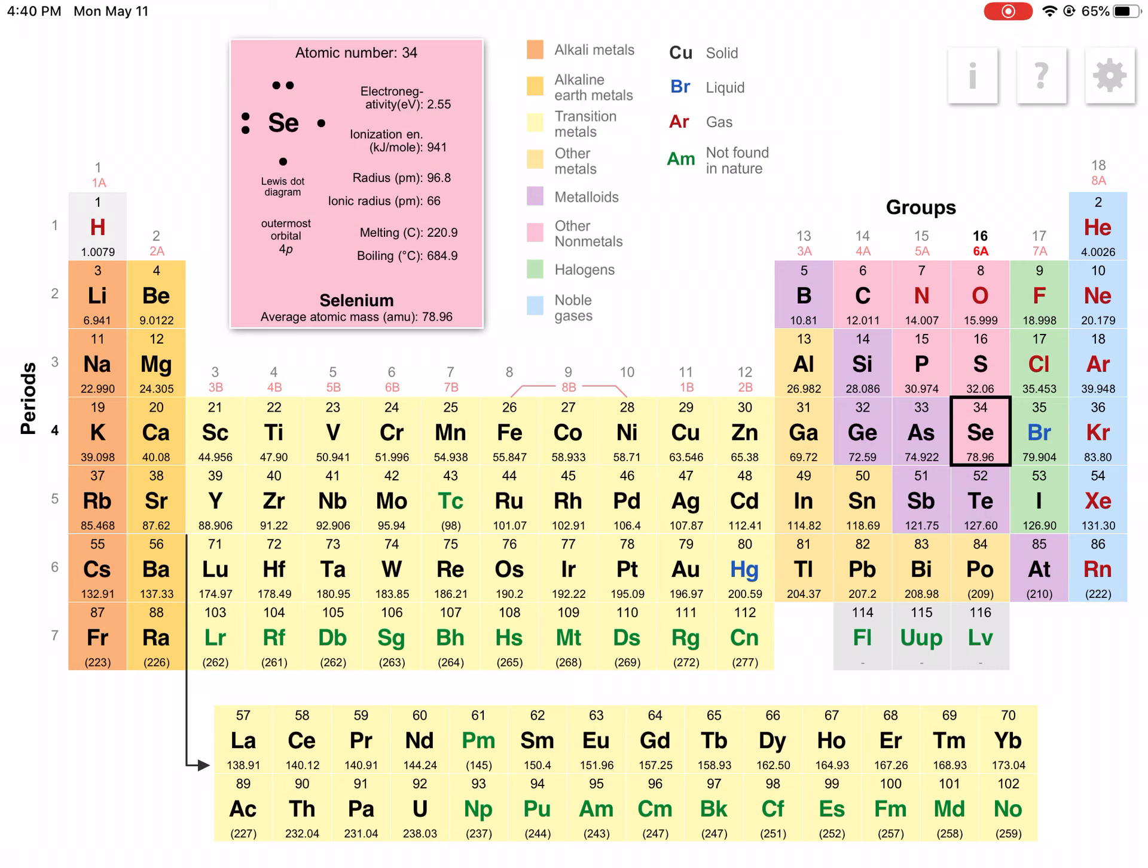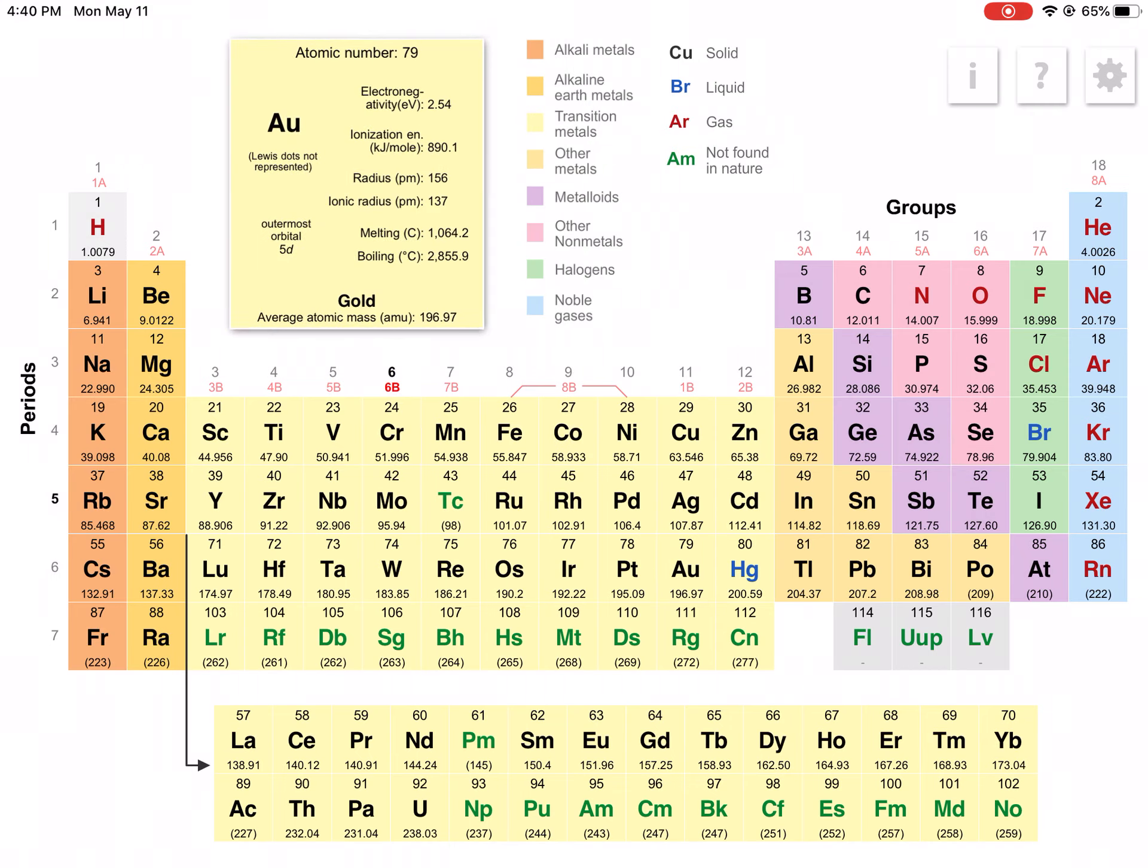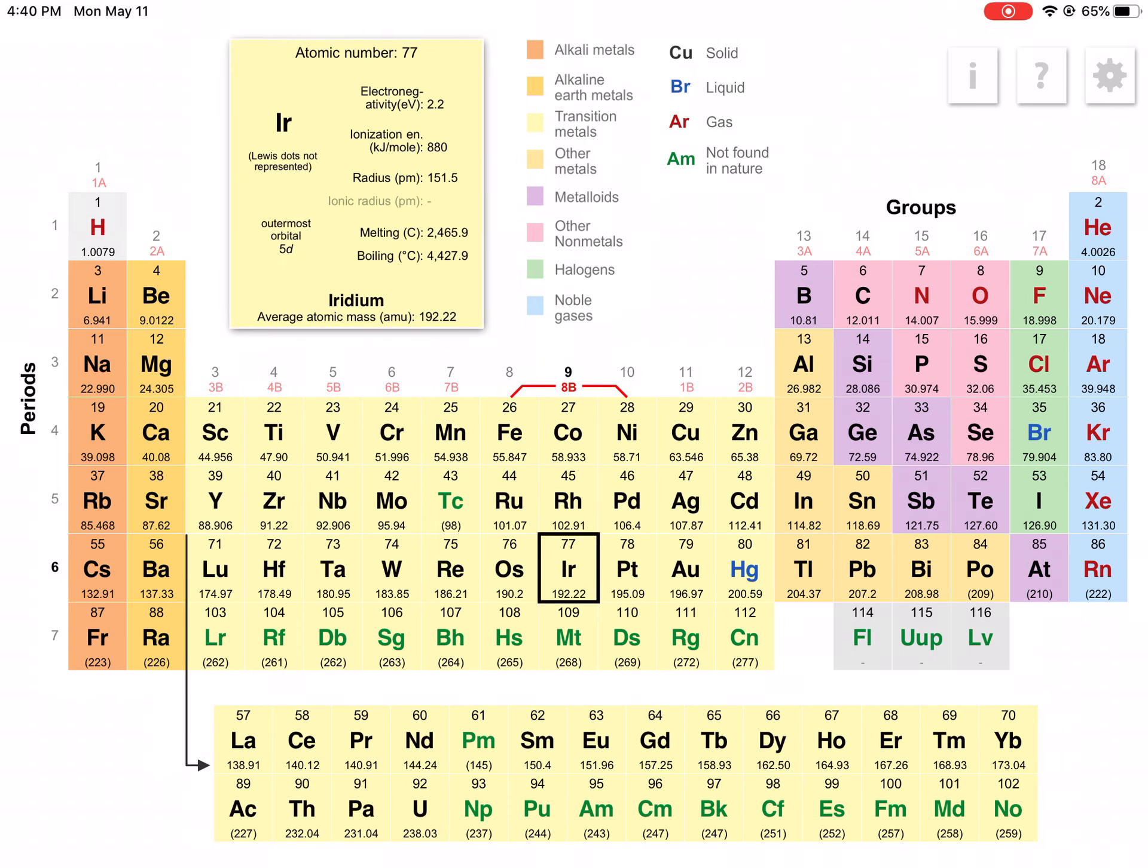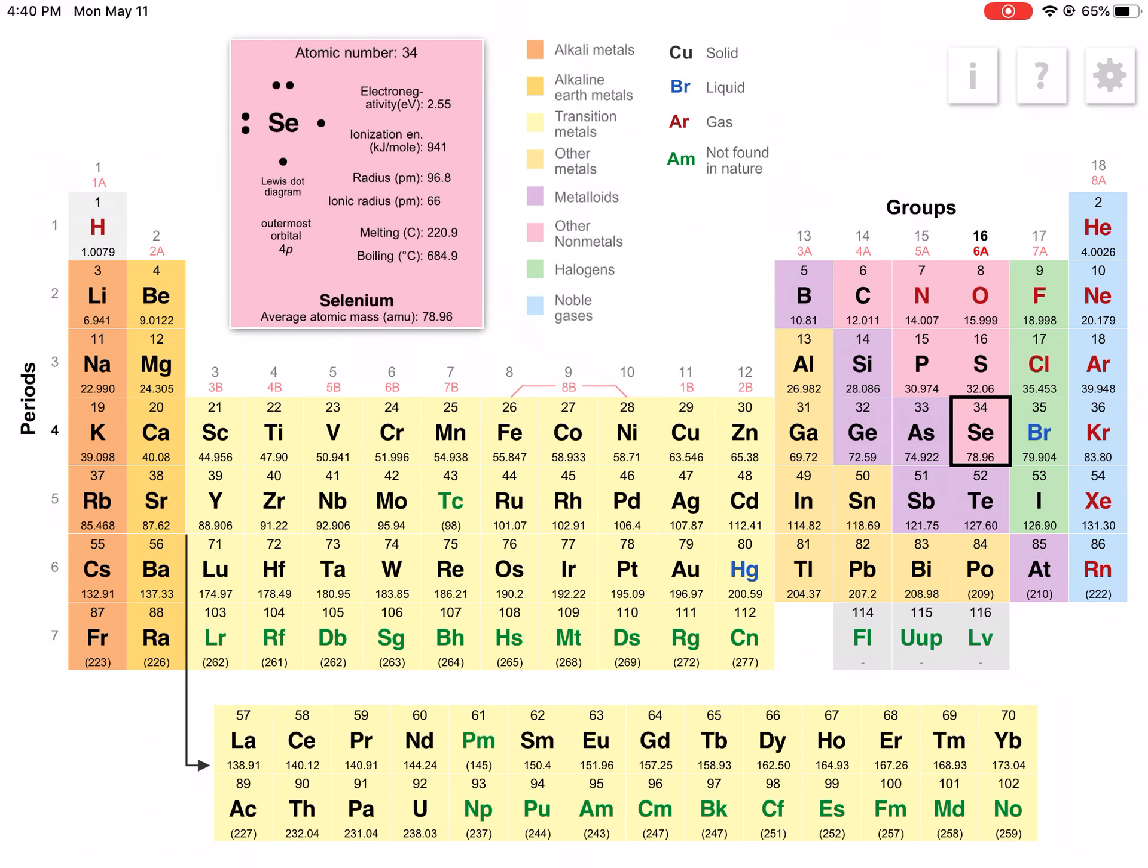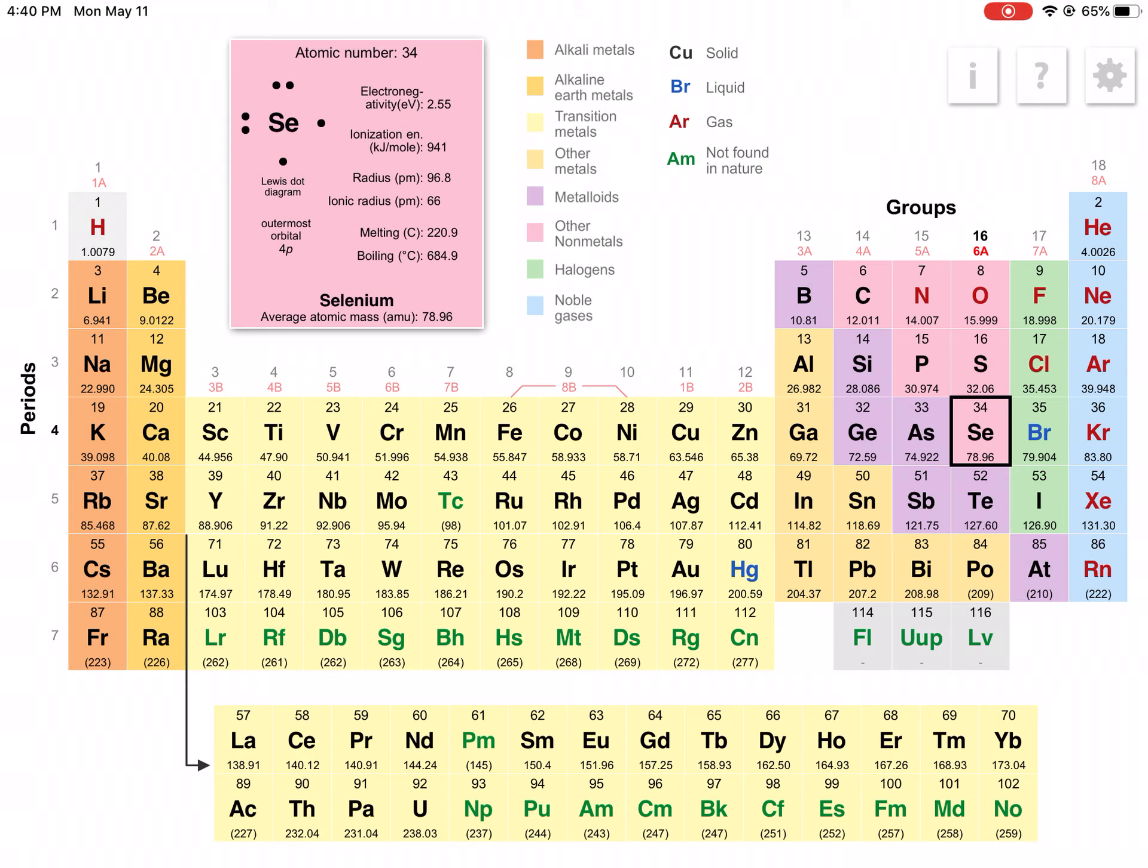So like for example scandium, titanium, gold, all of these elements in this area right here, we don't count them as we count across. So for selenium it's actually the sixth element, and so for its Lewis dot diagram it should have six dots around it. And so you should see that in the picture up above here that in that Lewis dot diagram there's only six electrons around it.